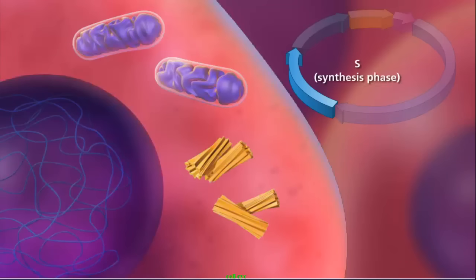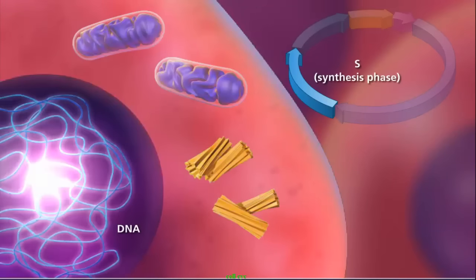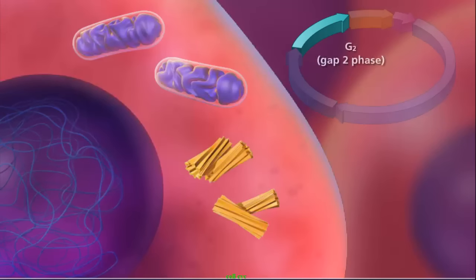Then, during S, or synthesis phase, the DNA replicates. Finally, during G2, or GAP2 phase, all the enzymes needed to aid in the process of cell division are produced.